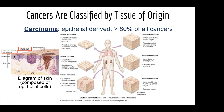Depending on which type of epithelial tissue has that cancer, you'll get different types of skin cancers — squamous cell carcinoma, basal cell carcinoma, or melanoma. Lung cancers are carcinomas, kidney cancers are carcinomas, intestinal and gastrointestinal cancers are carcinomas, and reproductive tissue cancers are carcinomas.